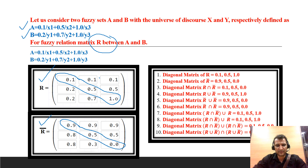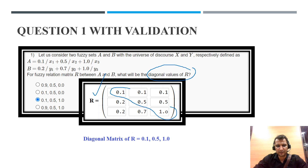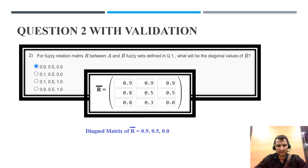Question 1: what will be the diagonal values of R? This is the fuzzy relation — just find out the diagonal values. The diagonal values are 0.1, 0.5, and 1.0. Therefore the correct answer is option C.